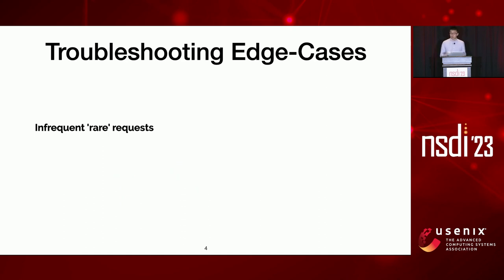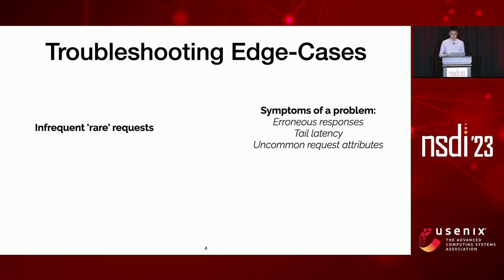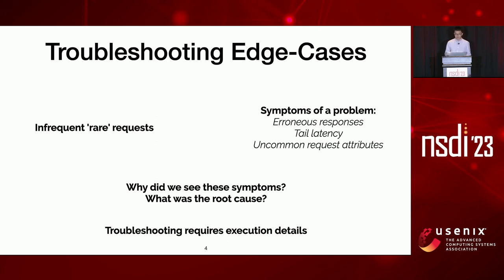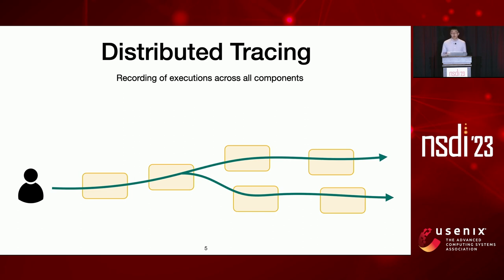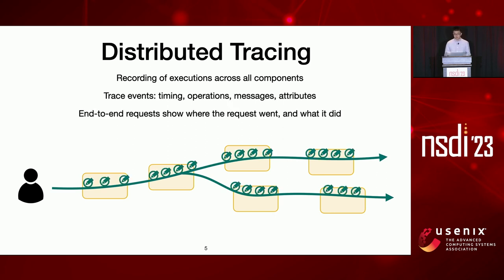We focus on one class of problem called edge cases. An edge case request represents rare and usually undesirable system behaviors — outliers or anomalies. We are familiar with edge cases: for example, long tail latency or occasional errors. Our goal is to introspect these rare requests that exhibit outlier symptoms to find the actual root cause. This is where we need end-to-end traces. A trace of a request is a detailed recording of its execution in every component, where each component generates trace events including timing, other attributes, and so on.